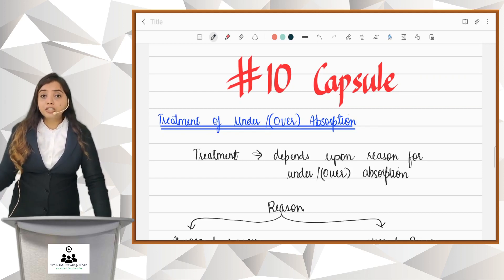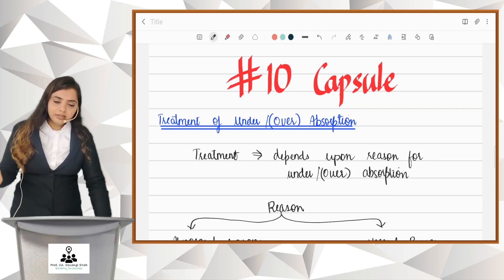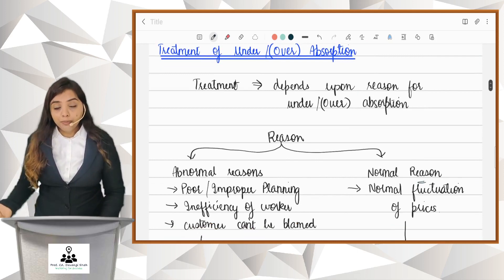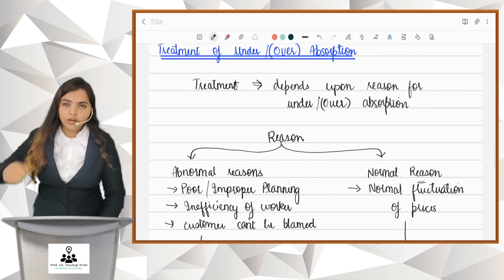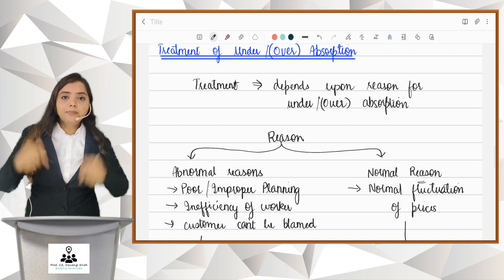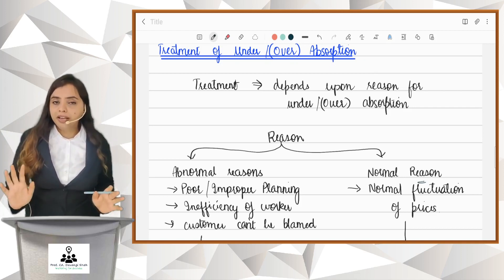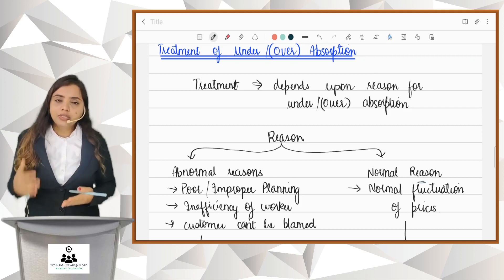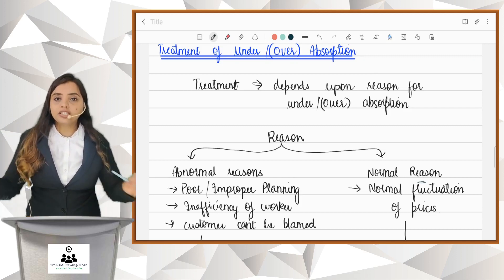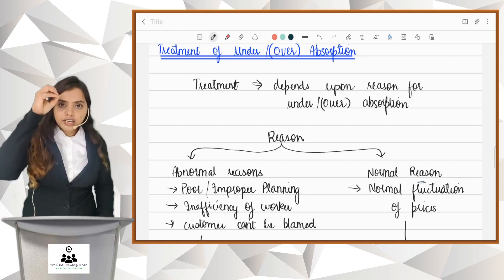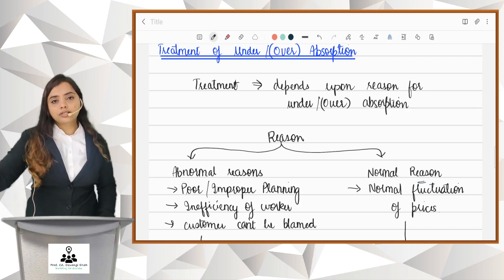The treatment of under/over absorption depends upon the reason of under/over absorption. The reason can be: if it is due to an abnormal reason — like you did not plan properly, your workers were inefficient, that is why you incurred more cost — or due to any abnormal reason where you can't blame the customer. Your company is at fault; the customer is not to be blamed. So when your overhead cost is more because of such reason, you transfer it to Costing P&L because the customer is not at fault. It is your loss, it is just because of you that this additional cost is incurred.